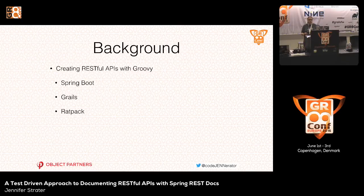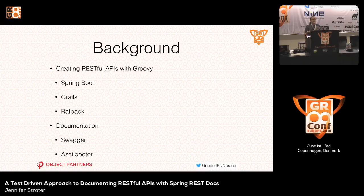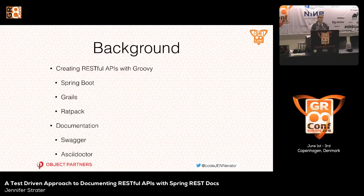The next thing that comes up is what tool you're using for documenting APIs. Who has used or is using Swagger? Looks like the same Spring Boot people. And who is using just AsciiDoctor, writing their own documentation as they go? Two. There are some other options as well, like RAML, that unfortunately I don't have time to cover, but I'm going to try and make some comparisons to these two.